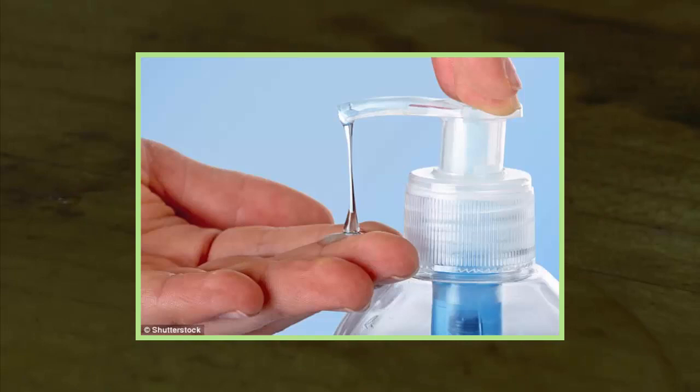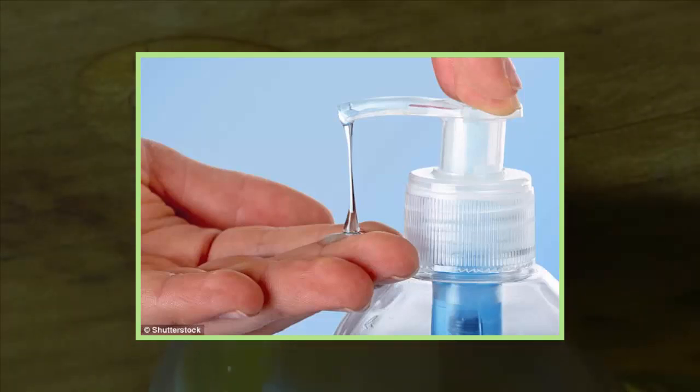Last autumn, the US banned 19 different antibacterial chemicals, including triclosan and triclocarbon, saying they were not effective at killing bugs.